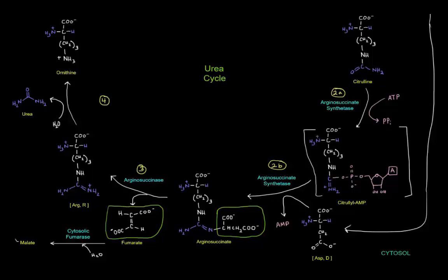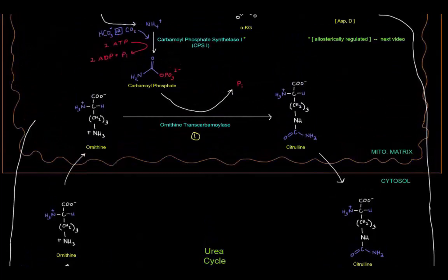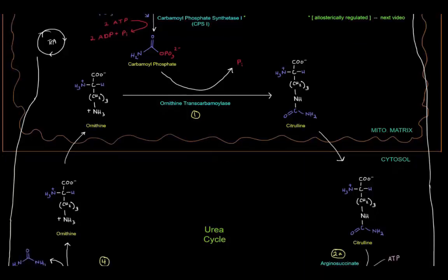And this is important because this malate can go back into the mitochondrial matrix and go through the TCA cycle, and go through the TCA cycle to give some NADH, which can give us some energy.